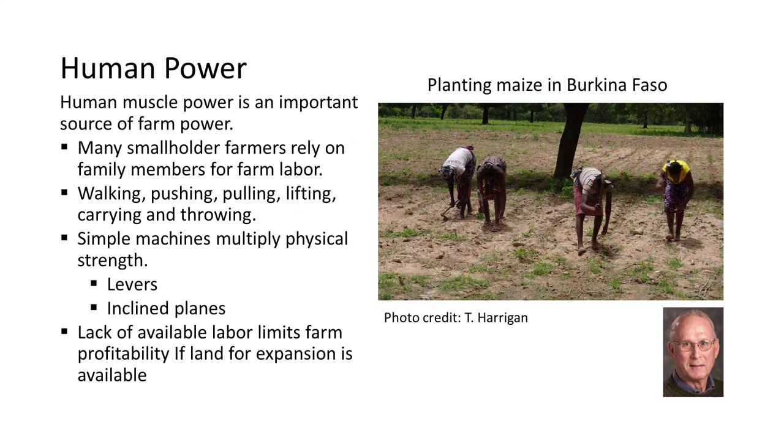Where labor is abundant and mechanization is limited, human power is a key source of farm power. Human labor is deployed in various ways: walking, pushing, pulling, lifting, carrying, and throwing. Simple machines such as levers and inclined planes multiply physical strength and permit farmers to accomplish more work with less effort. However, land preparation with hand tools is difficult and exhausting, and lack of available labor limits farm profitability, while excessive use of poorly designed hand tools can damage health.